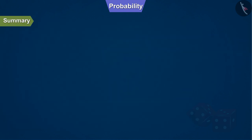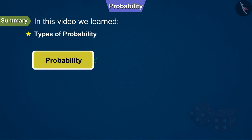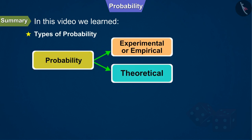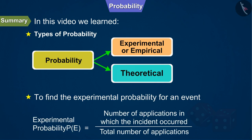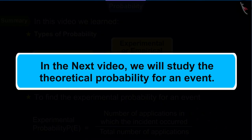Today in this video, we learned to find the types of probability and the experimental probability for an event. In the next video, we will study the theoretical probability for an event.